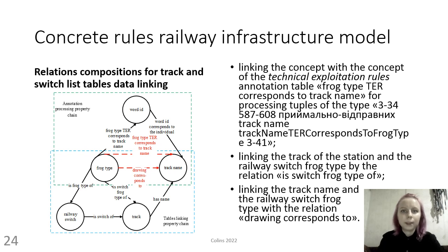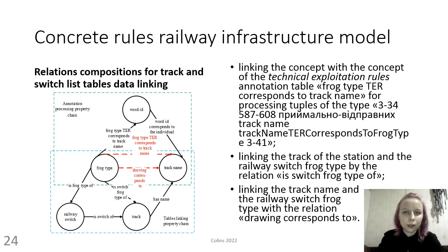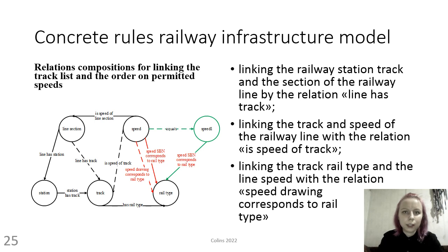Means for improving the safety of train traffic are proposed based on the semantic checking of data from various sources on permitted speeds in the railway track elements. Relations compositions are used to link the track switch in order to obtain a fact controlled by technical exploitation rules — that is, to associate the track name with the railway switch frog type. Relations compositions are also used to link the track list and speed table to obtain a fact controlled by building norms, associating the track rail type with the line section speed.